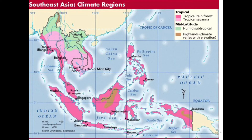Climate and vegetation: tropical climates. Pretty much all of this region lies between the Tropic of Cancer and the Tropic of Capricorn, making it a low-latitude zone, which means we're going to have a lot of tropical rainforests. Because of this, people have started taking advantage of the tropical rainforest vegetation zone, and it's creating a lot of problems from deforestation.